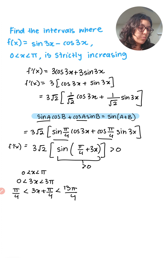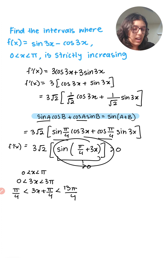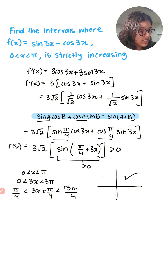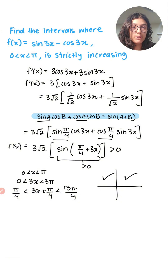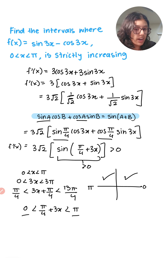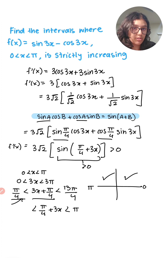Now comes the tricky part: knowing when this is actually greater than zero. Let's draw the coordinate plane. Sine is positive in the first and second quadrant, so we can rewrite it as this having to be between zero and pi. But from the domain, we know it has to be greater than π/4, so let's replace the zero with π/4.